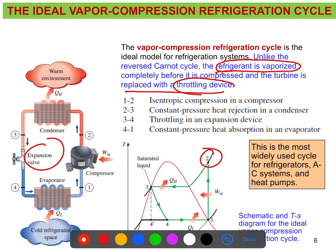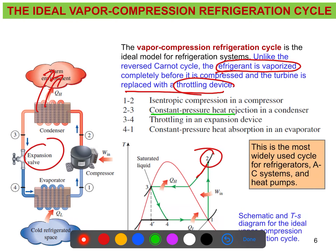At state 2, the refrigerant is superheated vapor. This superheated vapor enters the condenser, where it cools by rejecting heat to the hot surroundings. The temperature decreases because heat is being rejected, and this is a constant pressure heat rejection process. From state 2 to 3, constant pressure heat rejection occurs in the condenser.